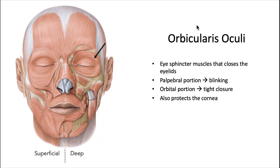The orbicularis oculi is the eye sphincter that closes the eyelids. The palpebral portion is in line with the actual eyelids and is responsible for blinking, while the orbital portion goes around the orbit of the eye and is involved with tight closure. The muscle also protects the cornea. The levator palpebrae superioris opposes the palpebral portion and opens the upper eyelid. This muscle also forms the superficial border of the periorbital fascial space discussed in our fascial space infection video.